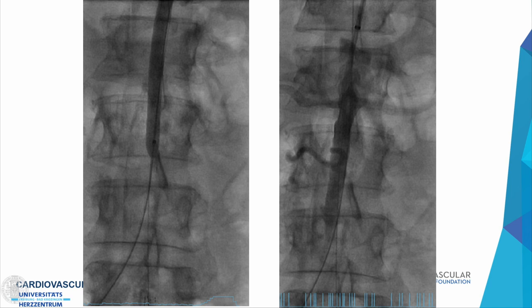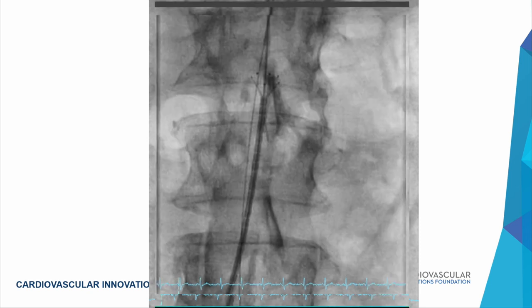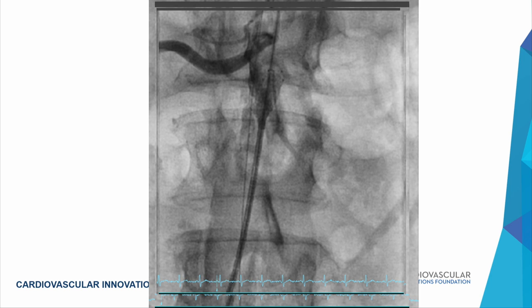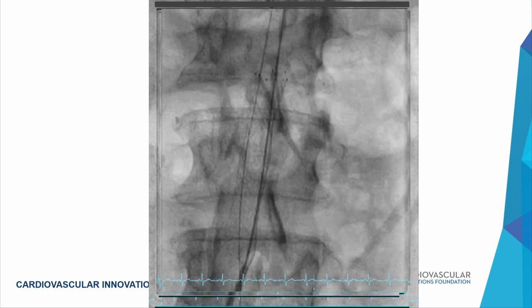While mainstream currently favors covered stents or endografts for aorto-iliac occlusion reconstruction, my general approach remains conservative. I use nitinol stents — specifically a 40 mm SMART stent implanted directly below the renal artery origins, step by step.